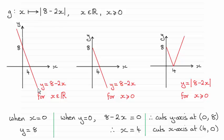It's a straight line and it would cross the y-axis when x is 0 and when x is 0 you just get y is 8, and it crosses the x-axis when y is 0 and when y is 0, x equals 4.